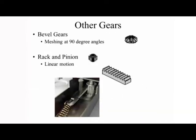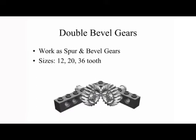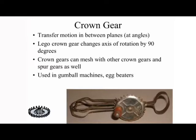Other gear types: Beveled gears mesh at 90-degree angles. Rack and pinion gears convert rotary motion to linear motion. Double beveled gears work as both spur and beveled gears and come in sizes of 12, 20, and 36 teeth. Crown gears allow transformation between planes at angles — the Lego crown gear changes the axis of rotation by 90 degrees. Crown gears can mesh with other crown gears and spur gears, and are used in gumball machines and egg beaters.